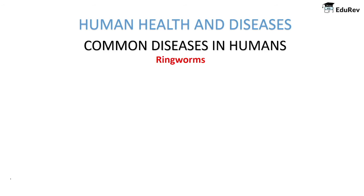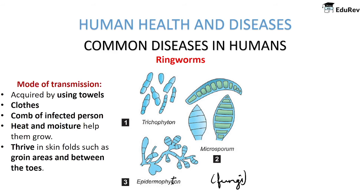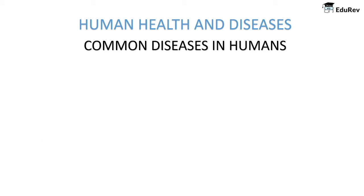The next common diseases are ringworms, caused by many fungi belonging to the genera Trichophyton, Microsporum, and Epidermophyton. This disease is generally acquired by using towels, clothes, and combs of an infected person. Heat and moisture help these fungi thrive in skin folds such as groin areas and between the toes. Symptoms include dry and scaly lesions on various parts of the body and intense itching.